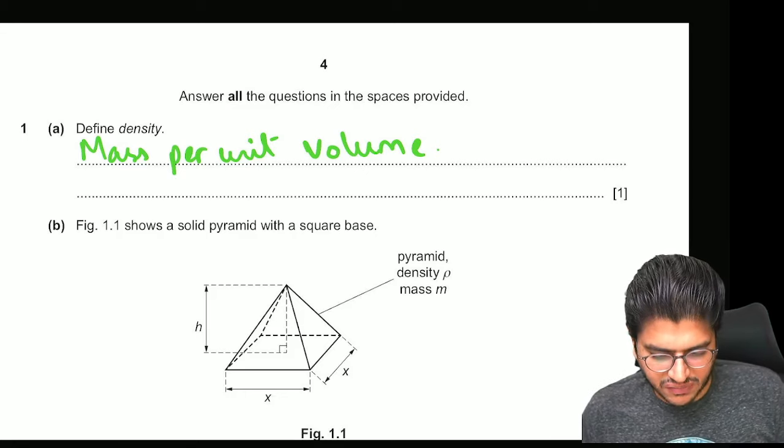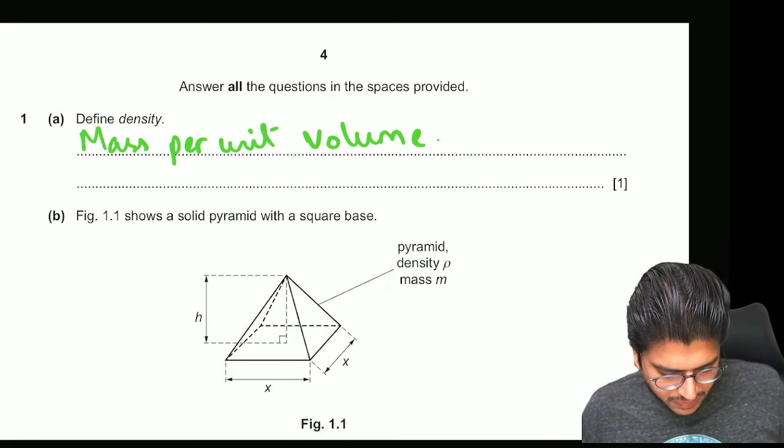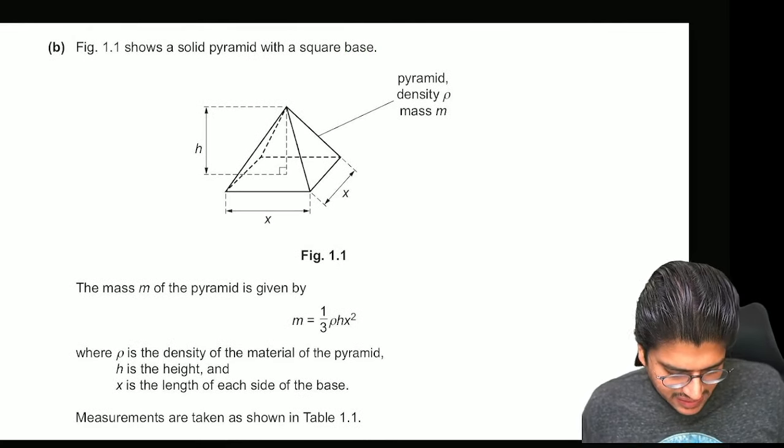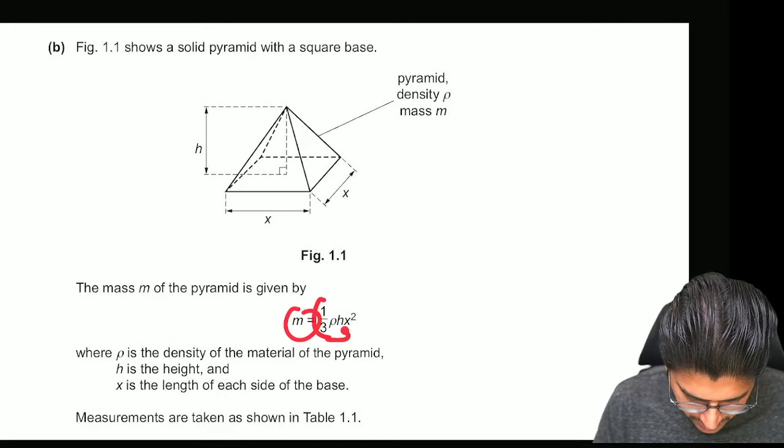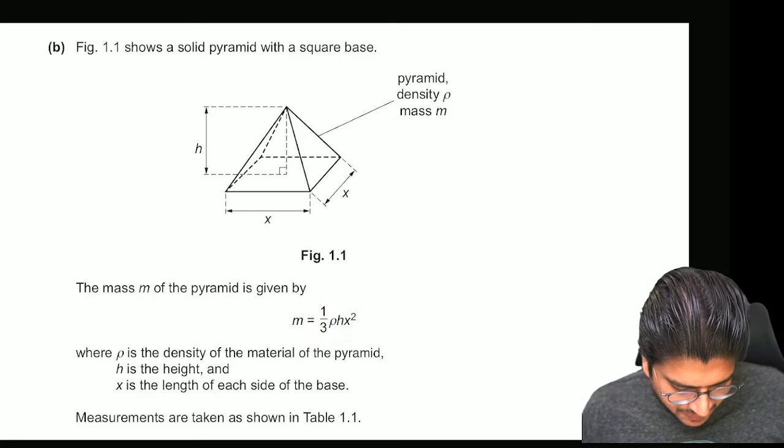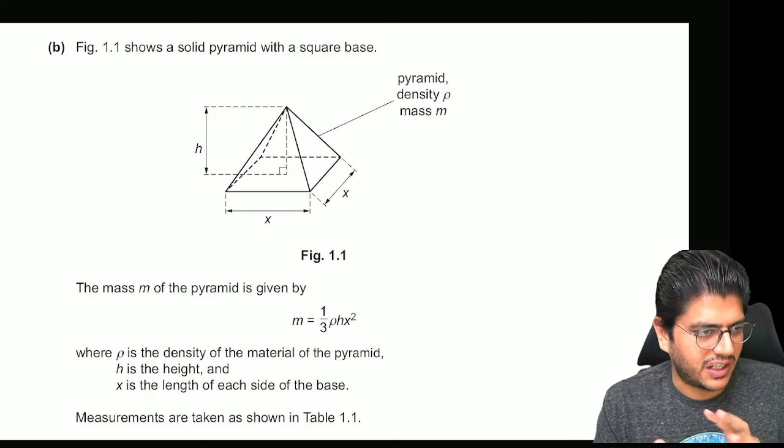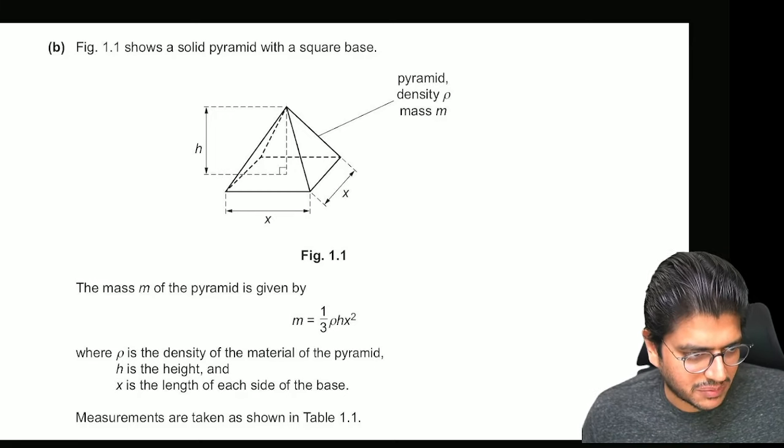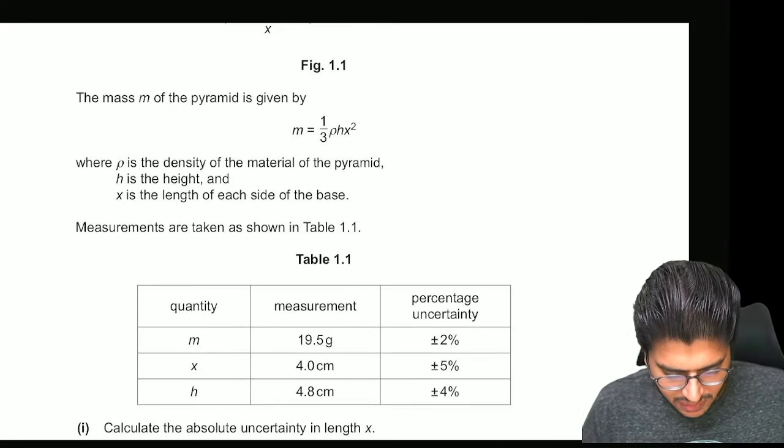Define density. Density is defined as mass per unit volume. You have a solid pyramid with a square base. The mass is given by this expression. And you have the volume over here. And then you have the density. So this is basically the formula of density rearranged. And the mass has been made the subject. Now the quantities are given, the measurements are given, and the percentage uncertainties are given.